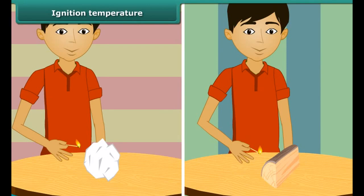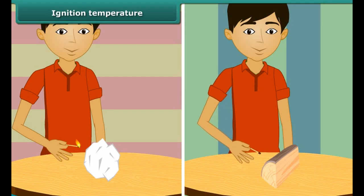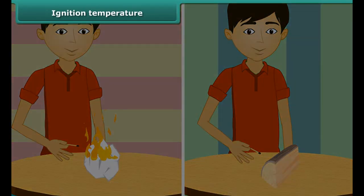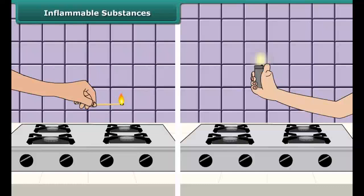Now bring the matchstick close to a piece of wood — the piece of wood does not catch fire. One lighted matchstick is not able to burn a piece of wood, but a piece of paper burnt quickly. This is because the piece of wood has not reached its ignition temperature. Ignition temperature is the lowest temperature at which a substance catches fire.